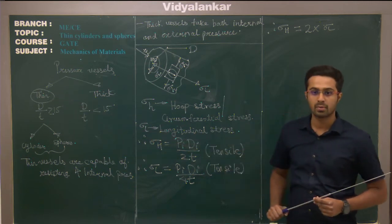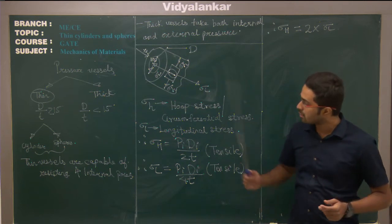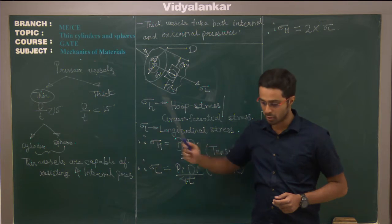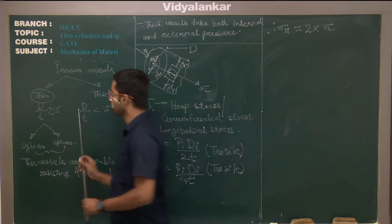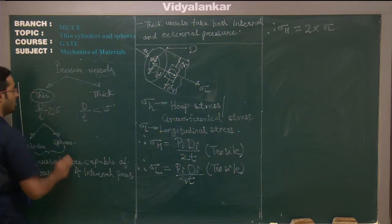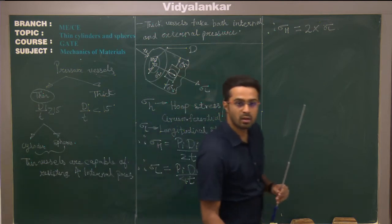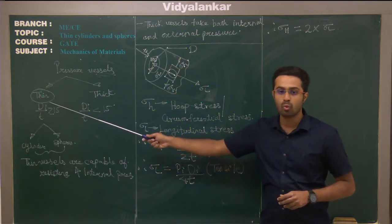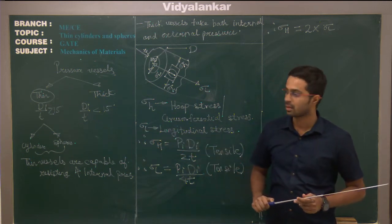How do you distinguish a thin and a thick pressure vessel? In most books, it is given when you have the internal diameter to thickness ratio. If that ratio — internal diameter upon thickness — is greater than or equal to 15, then it is known as a thin pressure vessel.